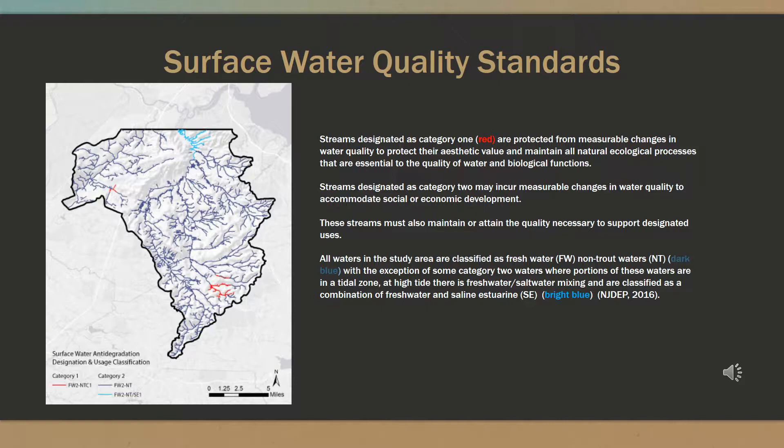Section 303 of the Clean Water Act sets minimum federal water quality standards, or WQS, meaning the states have the primary responsibility of establishing and revising water quality standards, which consist of the designated uses of a water body, the water quality criteria necessary to protect those designated uses, and anti-degradation policy. There are three tiers of anti-degradation designations in New Jersey: outstanding national resource waters, which maintains a water body in their natural state; category 1 waters, which protects the water body from any measurable change in existing water quality; and category 2 waters, meaning some lowering of existing water quality may be allowed based upon a social or economic justification.